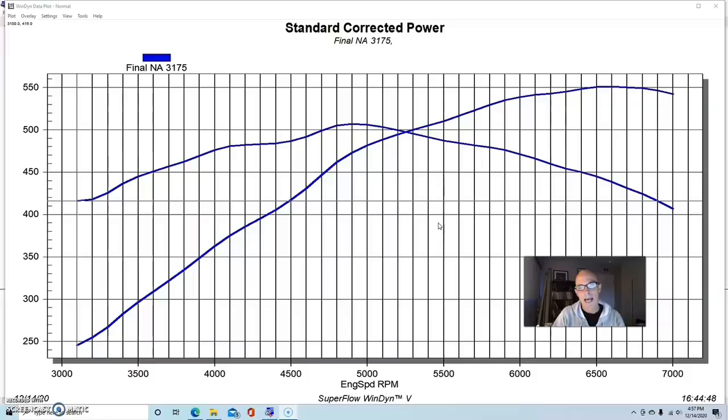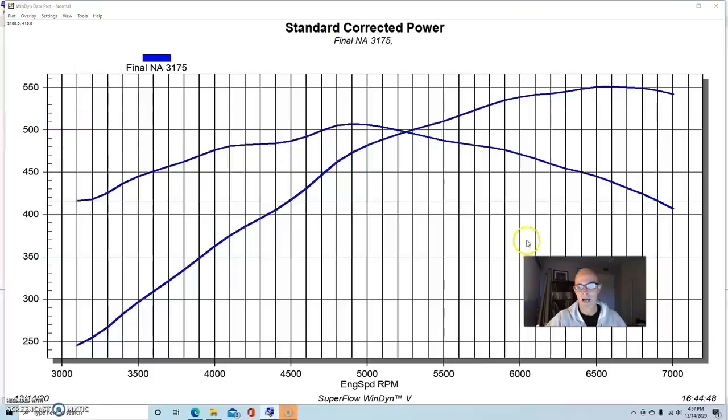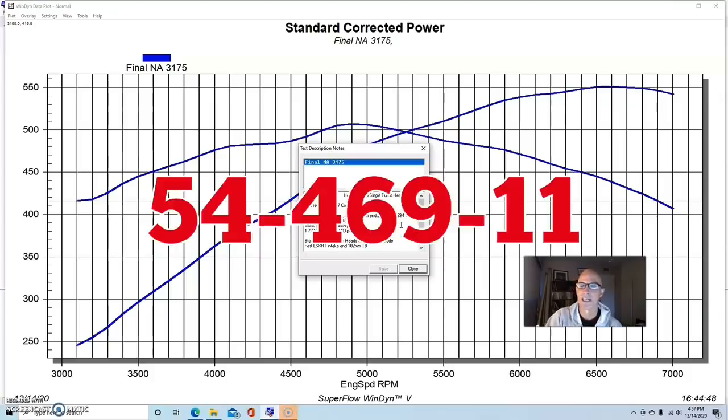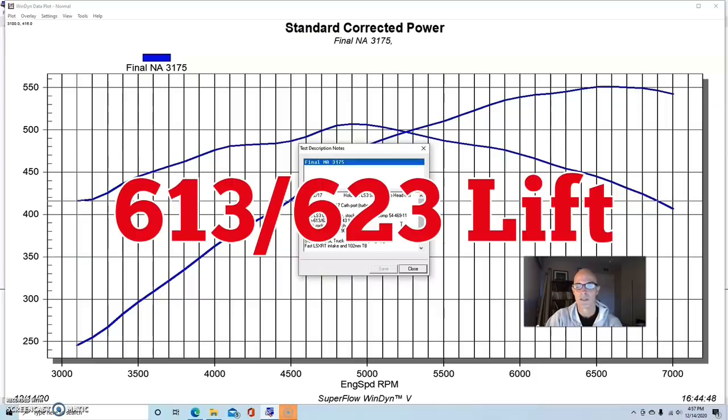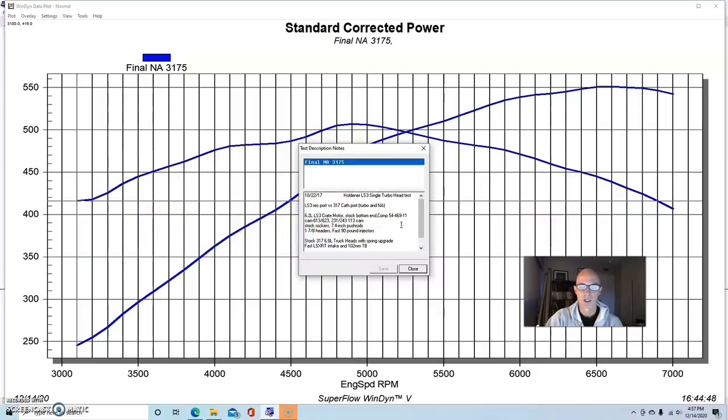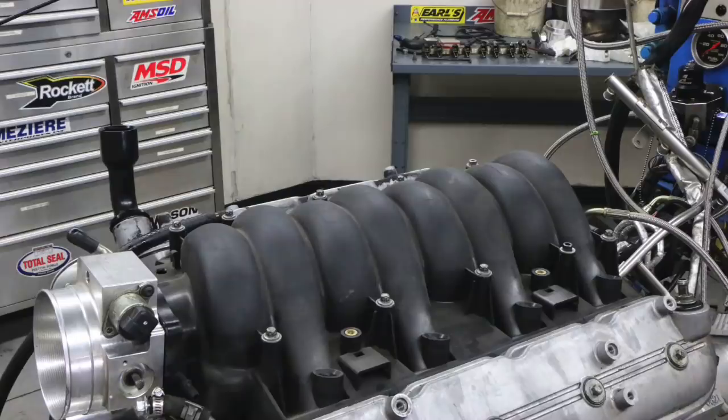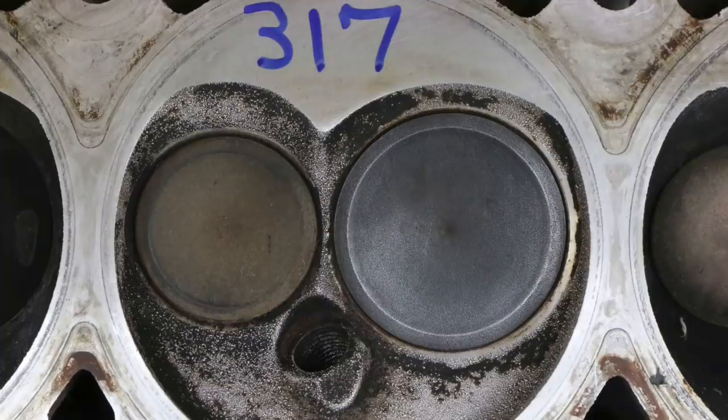But what I did was we had an LS3 crate motor and it was a cammed LS3 crate motor. We can take a look at the specs on that combination, but it was a 6.2 liter bore. It was a stock bottom end. It had a comp, a healthy comp cam. It was the 469 that I run in a lot of stuff. It was a 54-469-11. That was a 613-623 lift and a 231-243 degree duration and 113 degree lobe separation angle. We had standard length push rods in it, but they were hardened. We had inch and 7-8 headers.